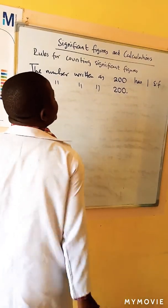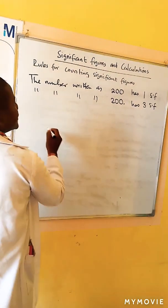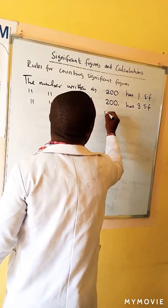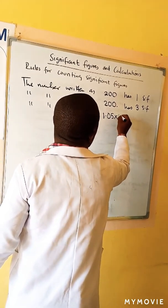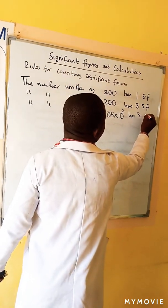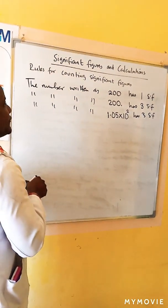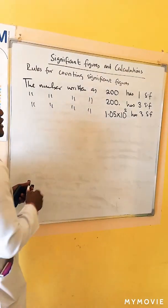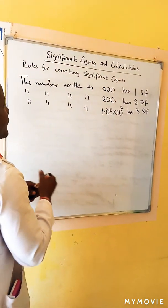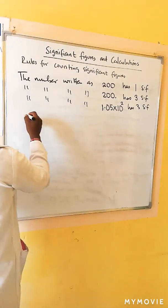The number written as 200. with a decimal point has three significant figures. The number written as 1.05 times ten to the power two has three significant figures. The advantage of writing in scientific notation, or exponential notation, is that the number of significant figures is clearly shown, and fewer zeros are used when writing a very small or very large number.